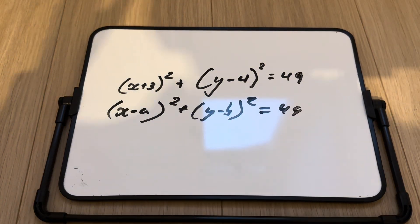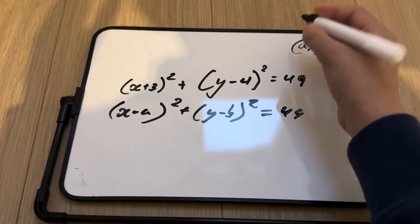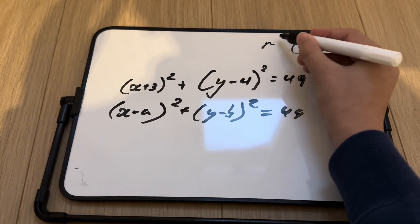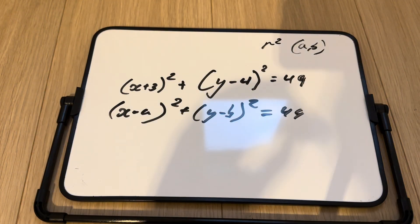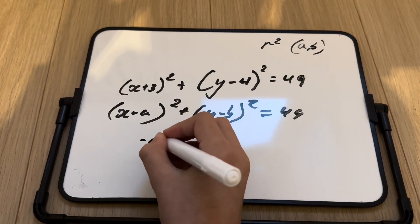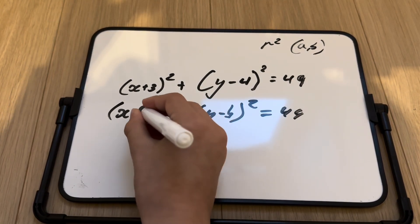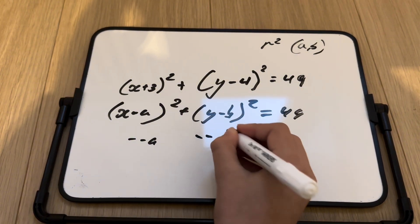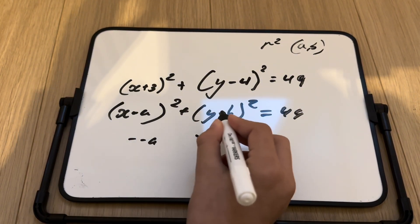So, anyway, don't forget that A comma B was the center, and R squared is 49. So, to find the center, we just put negative A. Sorry, we put negative, negative A, since this is negative A. Then we put negative, negative B, since this is negative B.